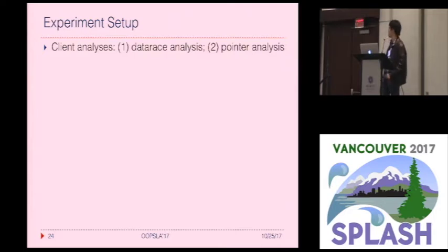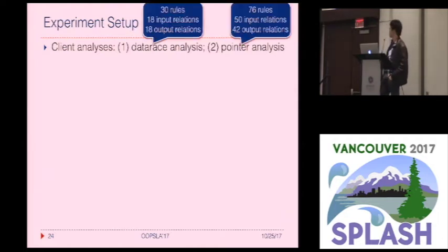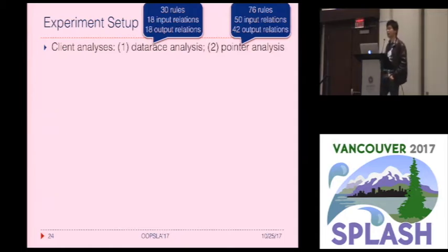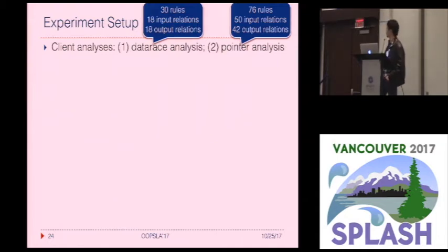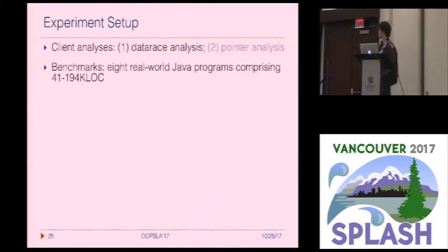To evaluate our approach, we apply it to two analyses: a race analysis and a points-to analysis. Both handle the full Java language; one contains 30 rules and the other contains 76 rules. Because time is limited, I'm only going to talk about the first analysis — the race analysis — applied to eight real-world Java programs.